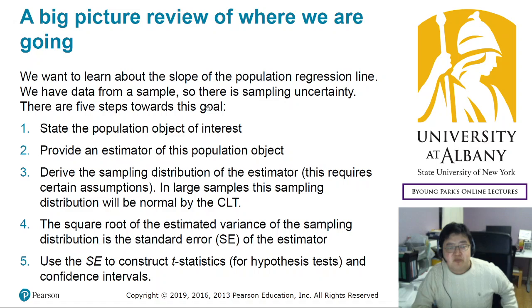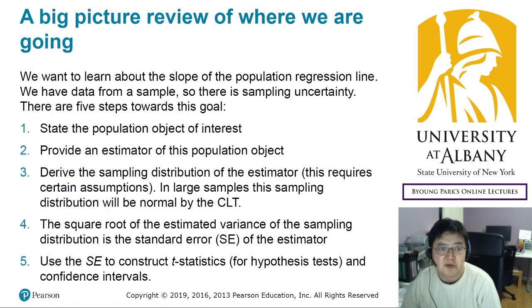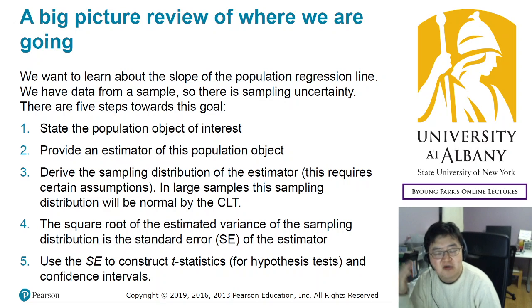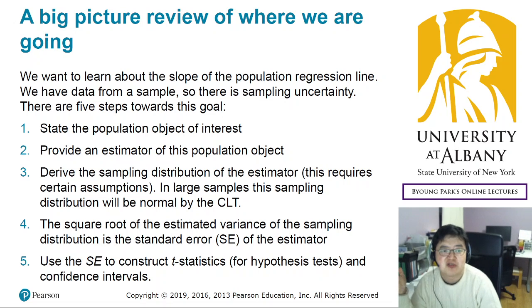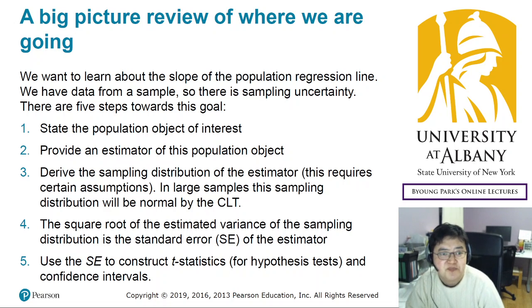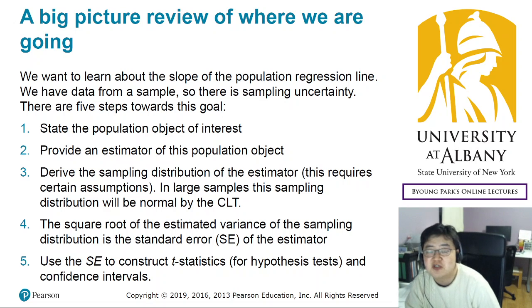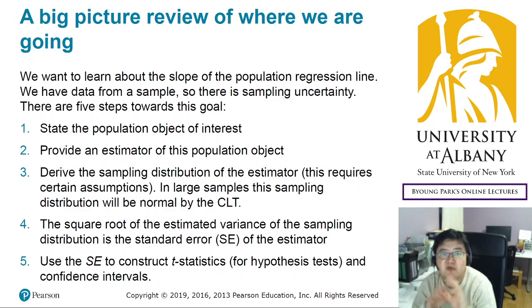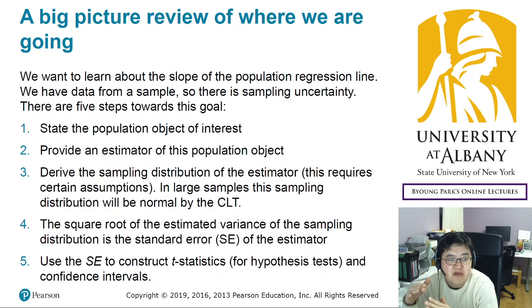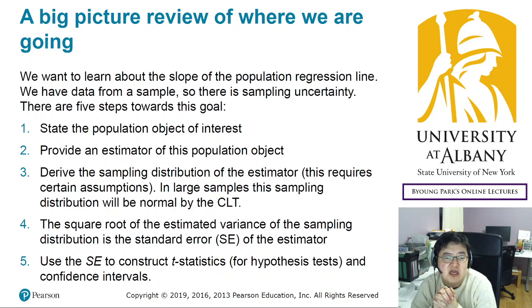Here is a brief review of what we have done in chapter 4. In chapter 4, we started with introducing a regression equation or regression line — what is a regression model. We want to explain an outcome variable, the test score in our running example. We would like to explain the test score using the student-teacher ratio, using a regressor. And to make everything simple, we assume that there is a linear relationship.